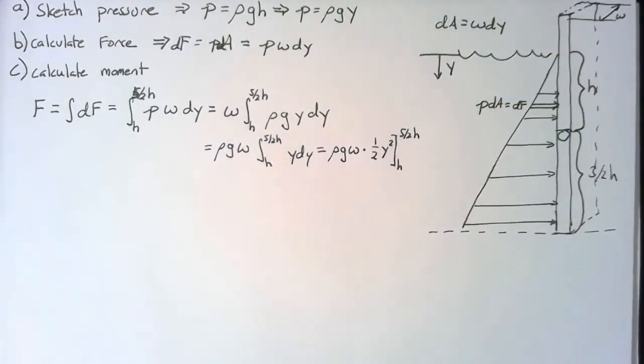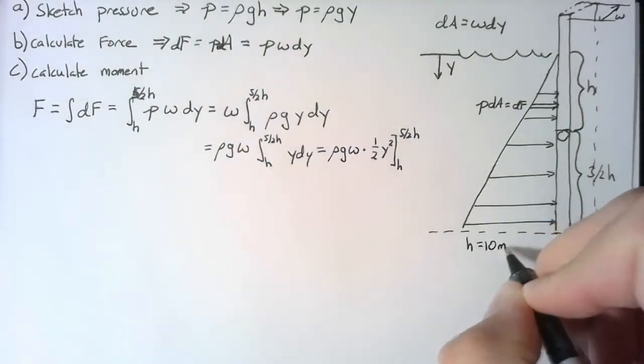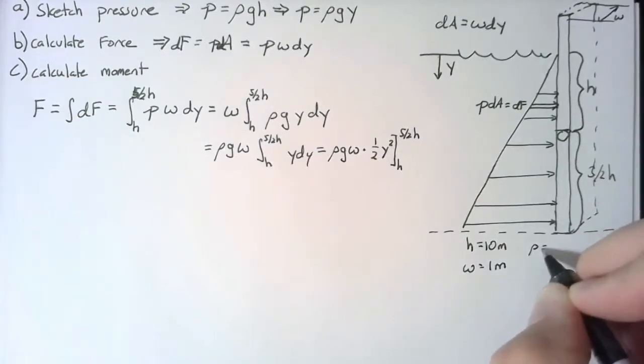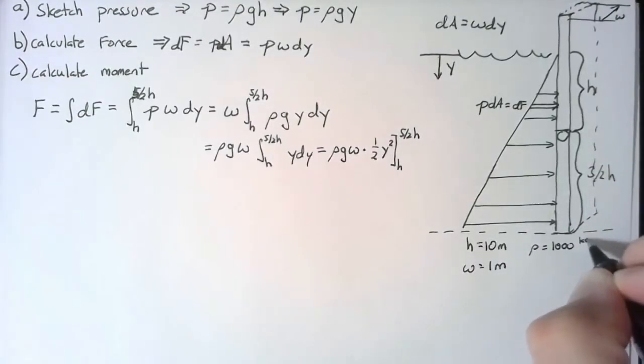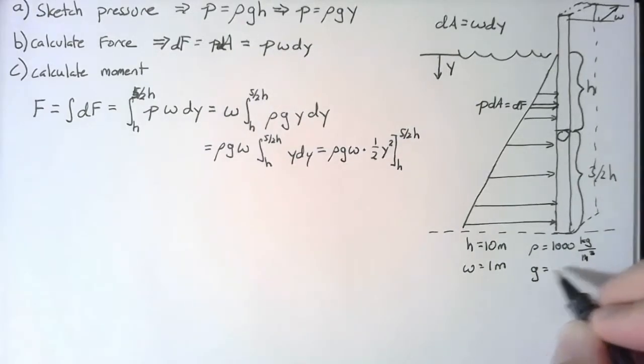To go any further, we need to actually plug in some numbers. I'm going to say that h is 10 meters, w is 1 meter, rho is 1,000 kilograms per cubic meter, and finally g is 9.8 meters per second squared.